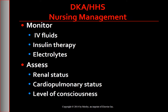Nursing management of both DKA and HHS involves closely monitoring blood glucose and urine for output and ketones, as well as lab data to determine appropriate patient care. Monitor the administration of IV fluids to correct dehydration, insulin therapy to reduce blood glucose and serum acetone levels, and electrolytes given to correct electrolyte imbalance. Assess the renal status and the cardiopulmonary status related to hydration and electrolyte levels.